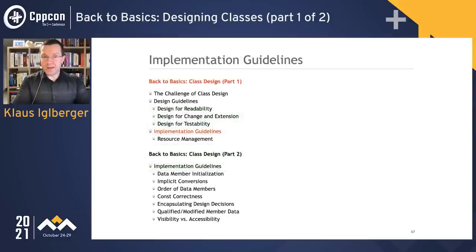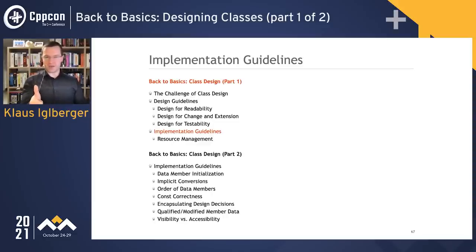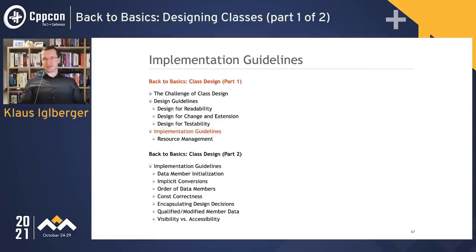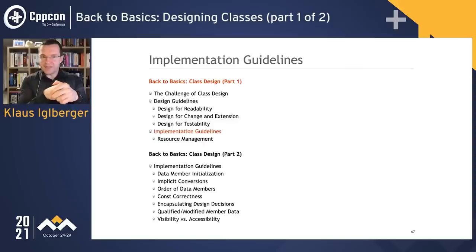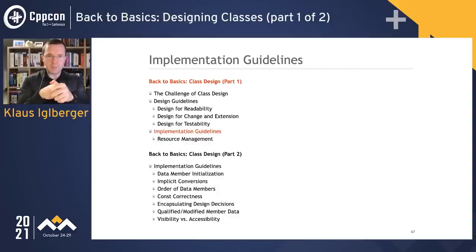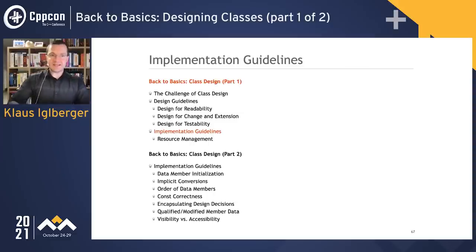This brings us to the end of the design guidelines. To summarize: design classes to be easy to change, to extend, and to be tested. Now we can start to talk about implementation guidelines, class mechanics, and code — what you probably like most. You'll realize that many of the things I now say carry exactly the same message: many of these implementation guidelines are based on the ideas already planted. It always comes back to making things easier to change and easier to extend.